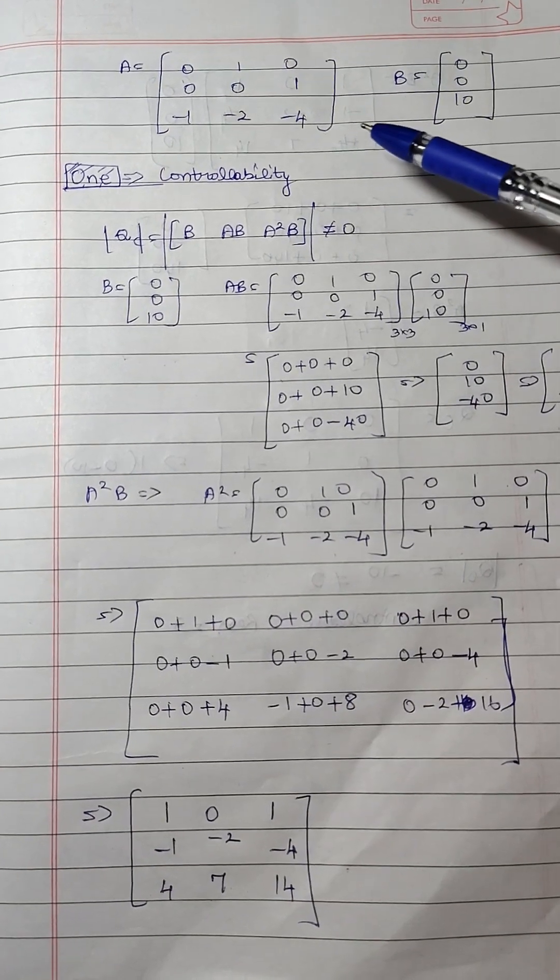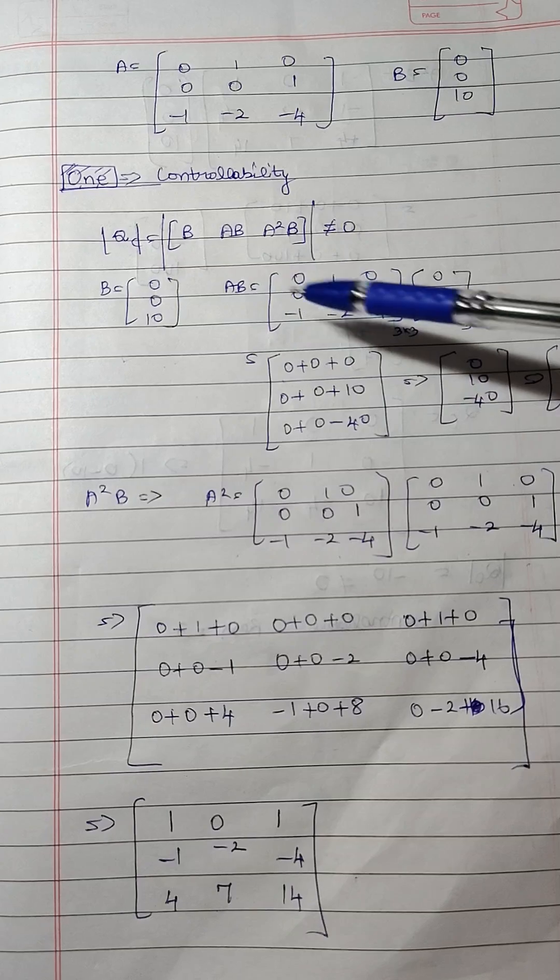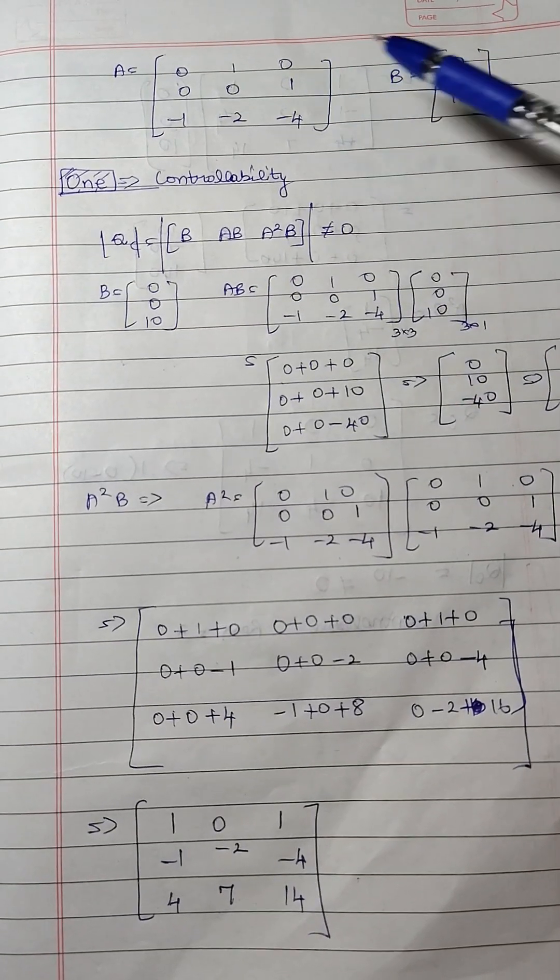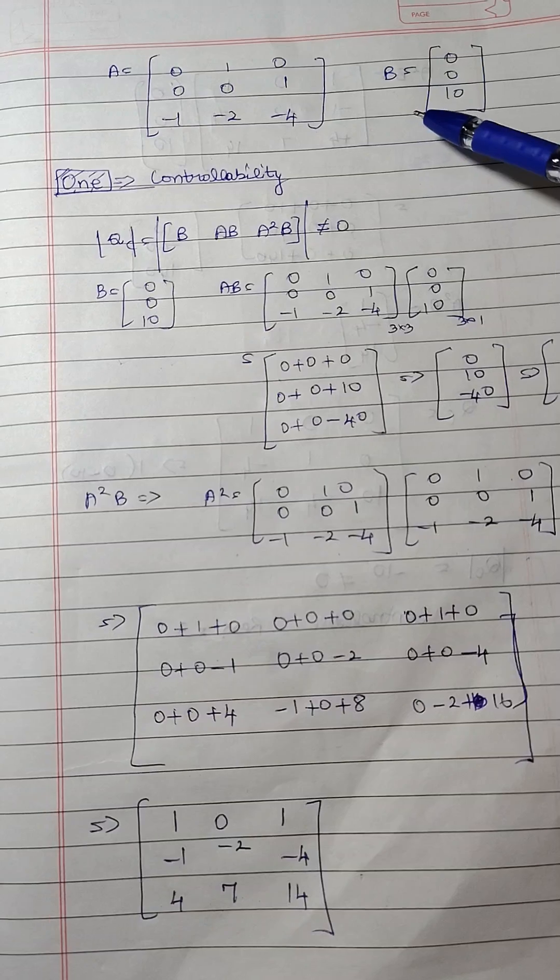This is the part 2 of controllability and observability problems. What is controllability? Q of C should not be equal to 0. This is A and this is B. This is obtained from the part 1. You can check part 1 if needed.